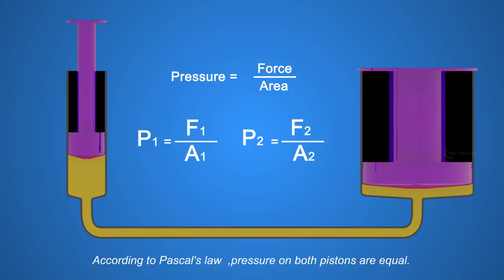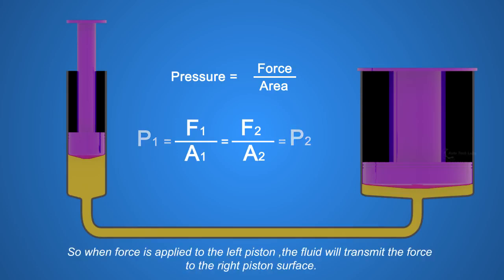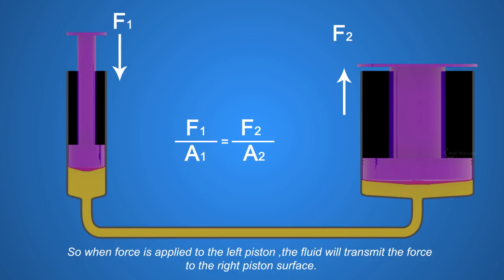According to Pascal's law, pressure on both pistons are equal, which gives us P1 equals P2. So when force is applied to the left piston, the fluid will transmit the force to the right piston surface.